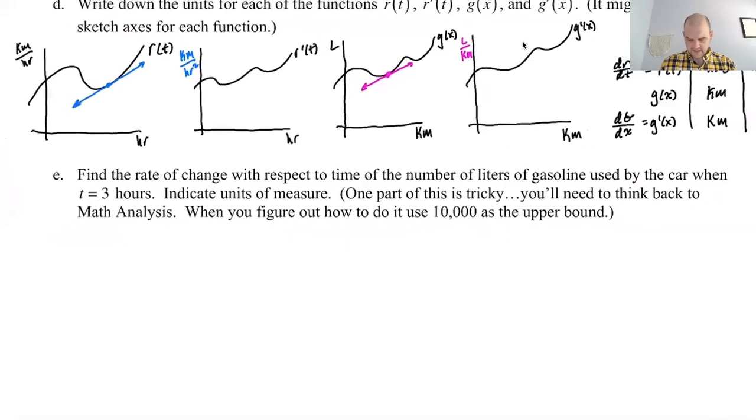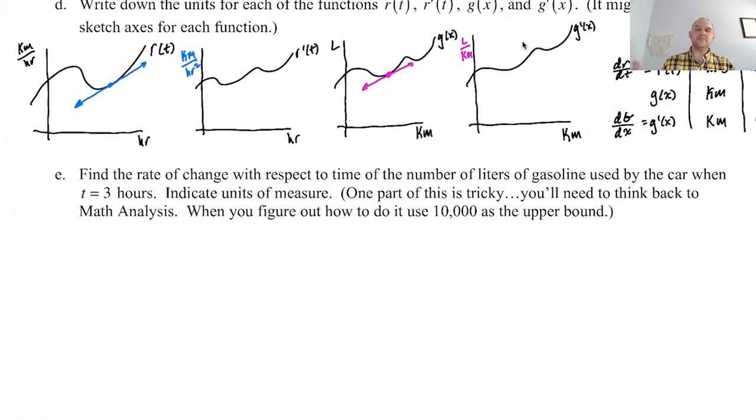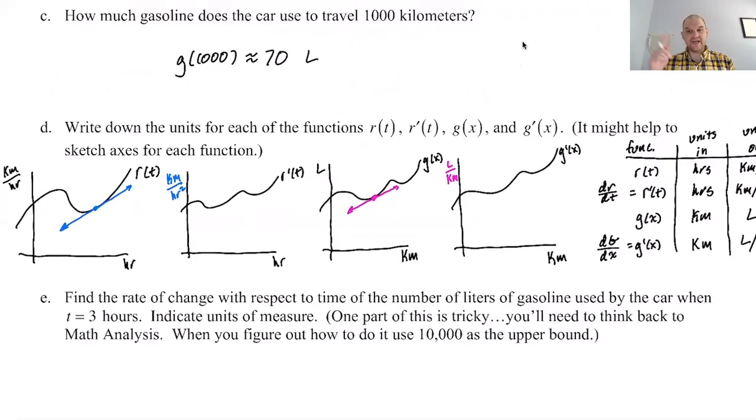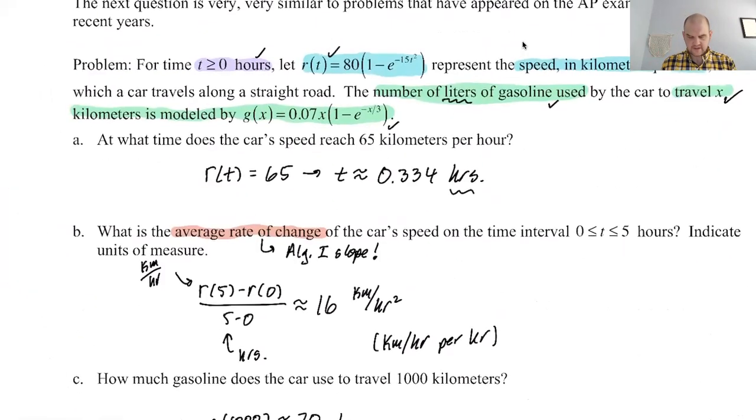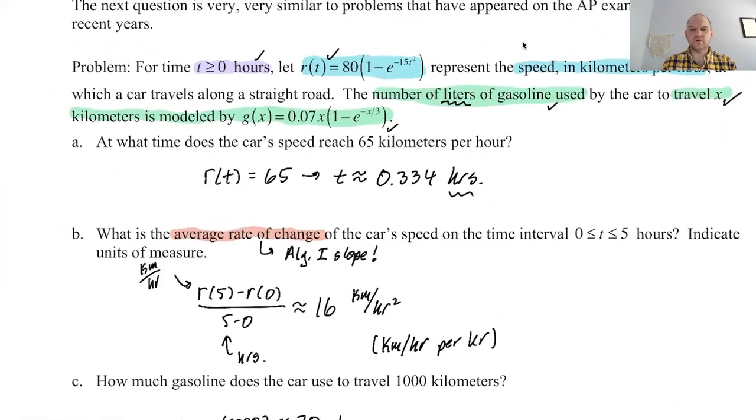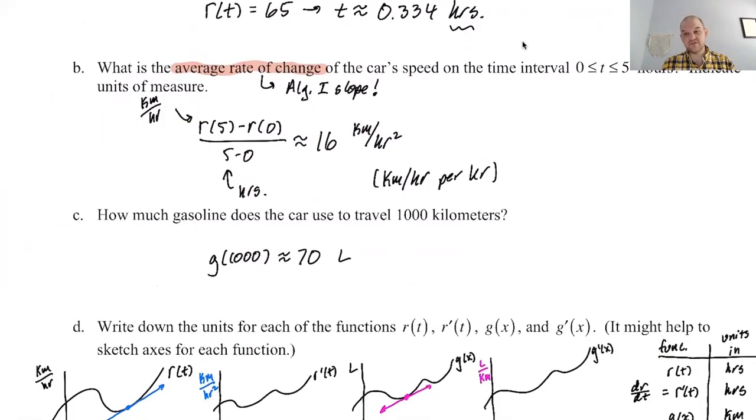All right, we're back. We're on page six of notes two of CalcAB, basically talking about the chain rule. We're doing a problem here that is pretty involved. So we've got an r of t, a g of x. So we have two different independent variables, kind of an issue. We looked through, did some problems that kind of get you familiar with what the functions are doing. So we found the time that the speed reached a certain value. We found the average rate of change, which is just algebra and slope, and looked at the units of that.